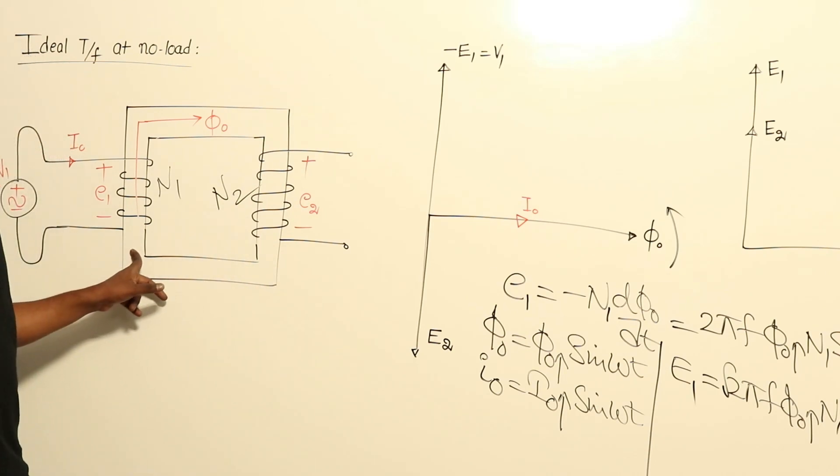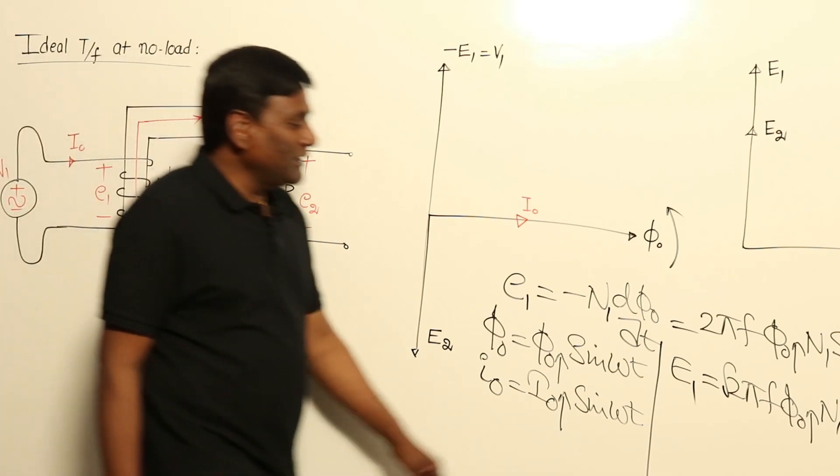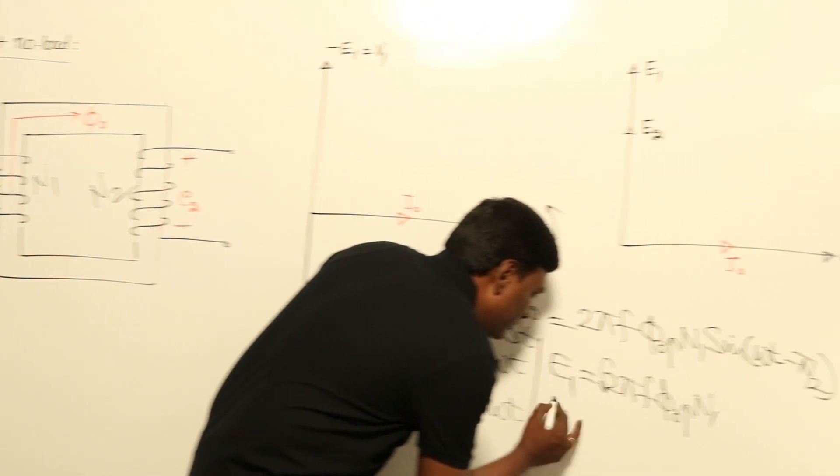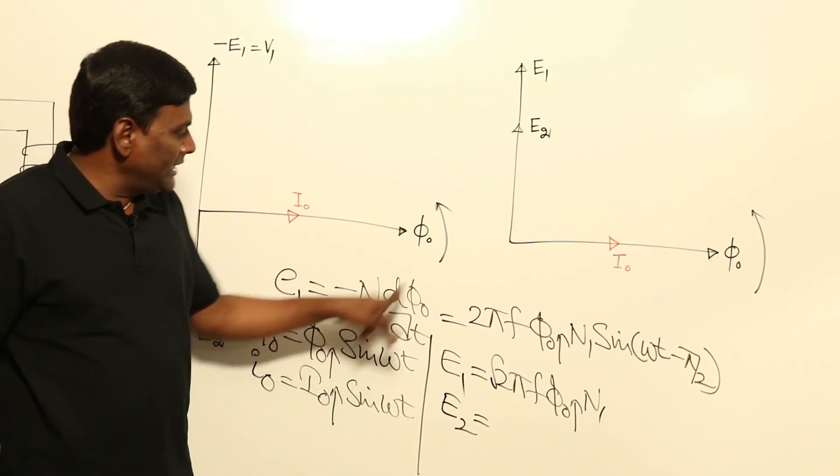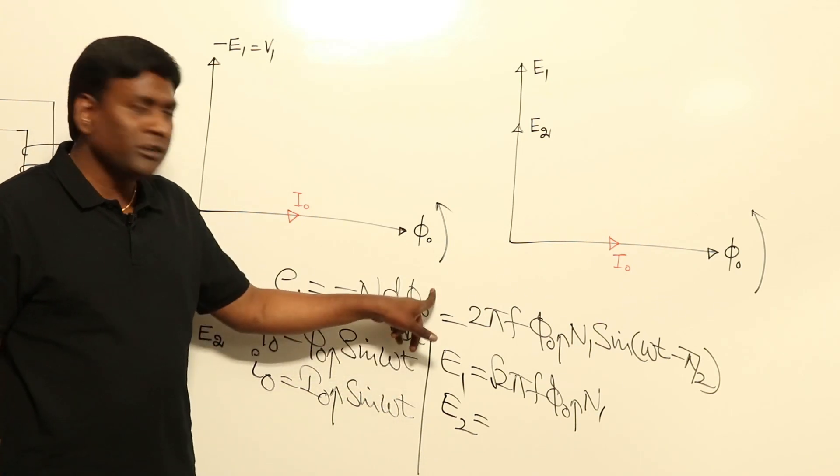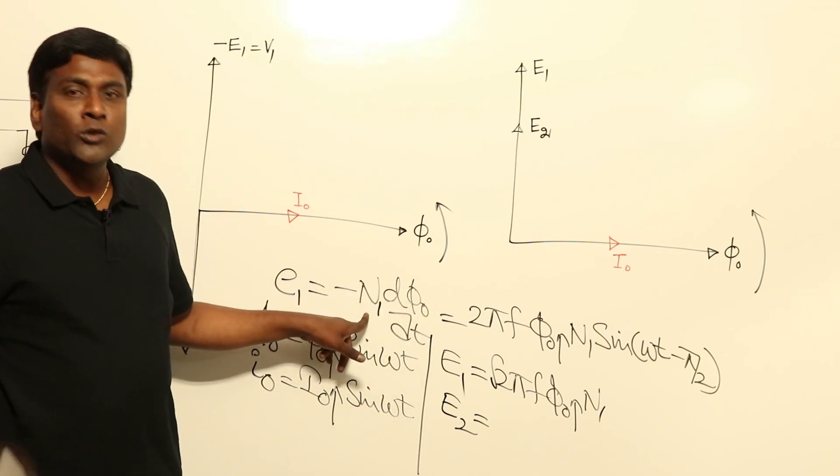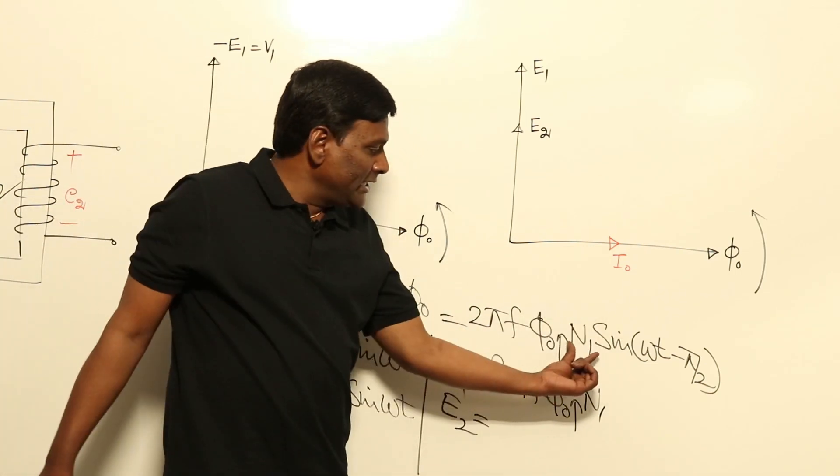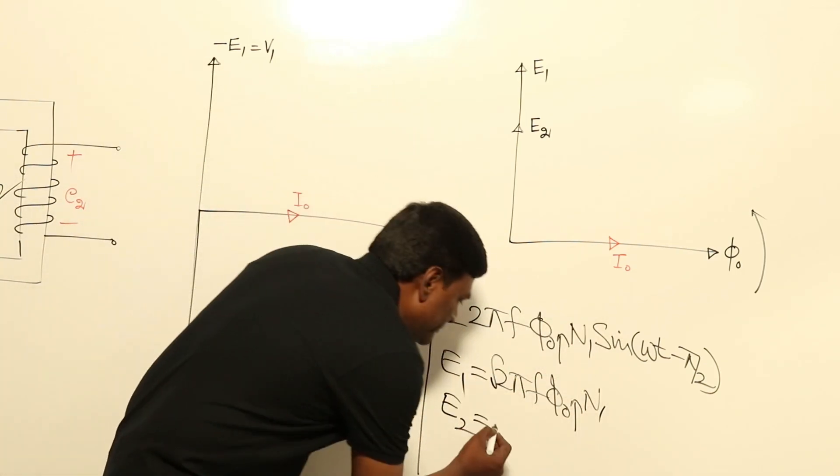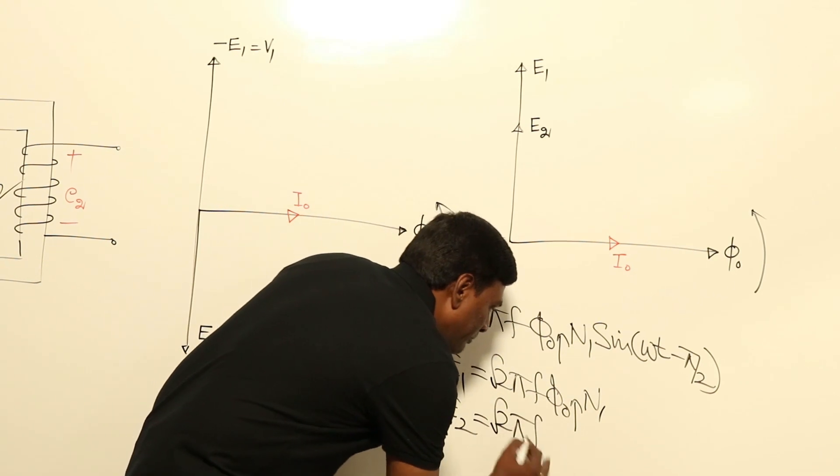Flux in primary and secondary is going to be same because leakage is not considered now. Under that conditions, E2 is going to be minus N2 dΦ0/dt. Same Φ0 will be there, and number of turns N1 should be replaced with N2. So same equation will come - in place of N1, N2 should be placed. So root 2 π f Φ0 max N2.